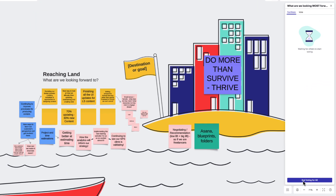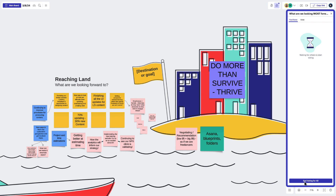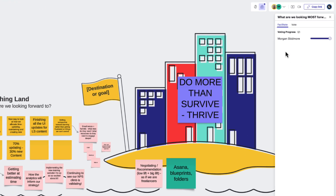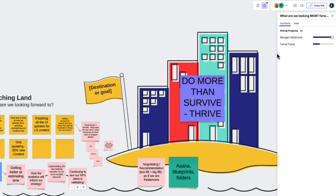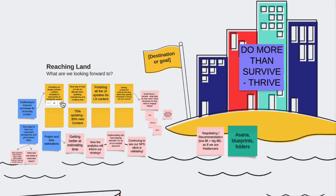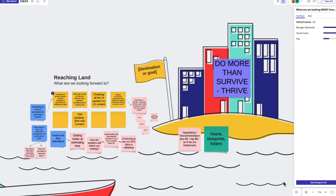As soon as we do this, the voting panel will appear on everyone's screen. As facilitators, we'll be able to see everyone's votes as they appear. And if we want to participate, all we have to do is hover over an object and click. Once the timer runs out, or when our team has finished, we'll end our voting session by clicking here.